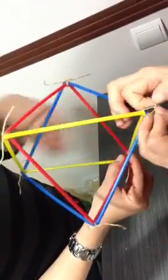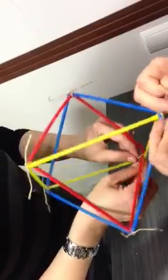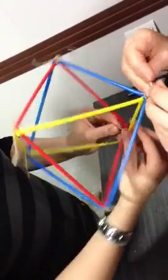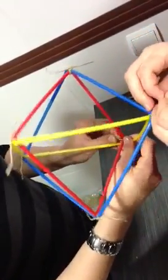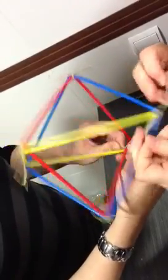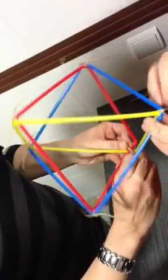This is, by the way, the skeleton of the shape. We're just seeing the edges. Polyhedron would be a solid shape. So for that, you can actually wrap the shape in paper.